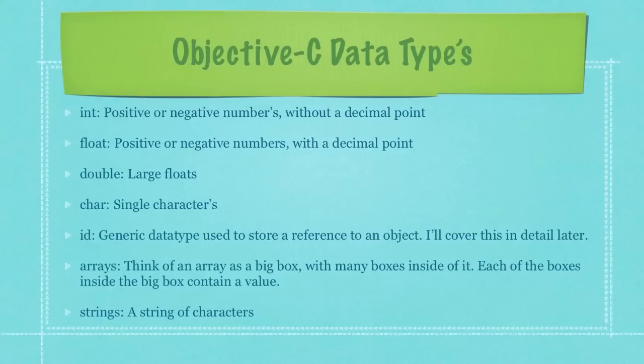First off, you have ints. These are positive or negative numbers that do not include a decimal point. Then you have floats, which are also positive or negative numbers with a decimal point. Doubles, which are just simply large floats. Chars, or characters, which are just simply single characters. ID, these are generic data types used to store a reference to an object, and I'll cover this in much more detail later. Arrays - think of an array as a big box with many boxes inside of it. Each of those boxes inside of the big box would also contain its own value. And strings are just strings of characters.